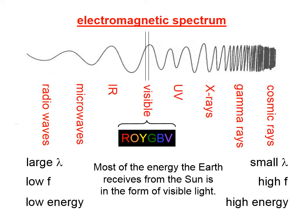We might ask: why is it that humans are only able to derive information from this very narrow band of the spectrum, which we call the visible spectrum? One reason could be that most of the energy the Earth receives from the sun is in the form of visible light. So it would be beneficial to creatures on this planet to make sense out of that portion of light, and not waste resources trying to make sense out of other variations of the spectrum that the sun doesn't provide much of to the Earth.